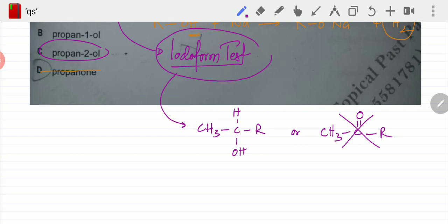If I draw option C, it's propan-2-ol—3 carbon atoms, OH on the second one. You can see it's a methyl next to a carbon H and OH, so it's going to give a positive result for iodoform test.